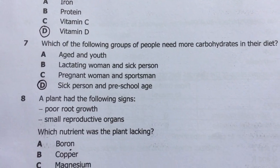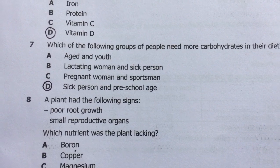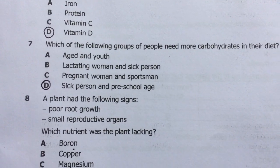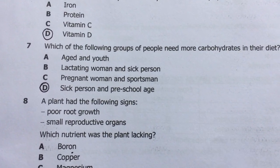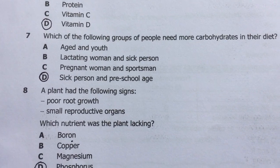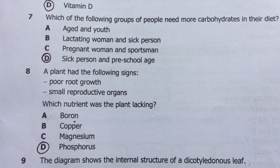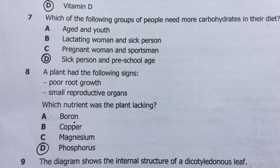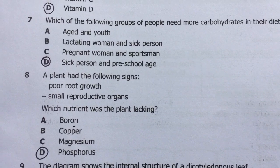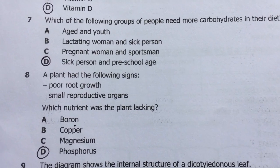Number eight: a plant had the following signs — poor root growth and small reproductive organs. Which nutrient was the plant lacking? Phosphorus is the answer.